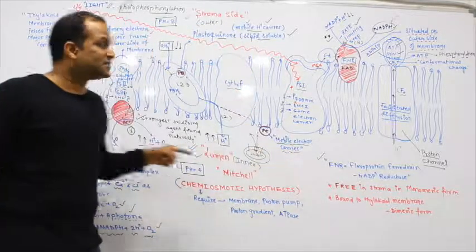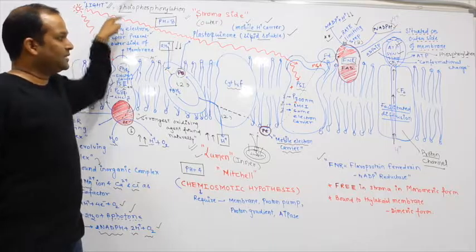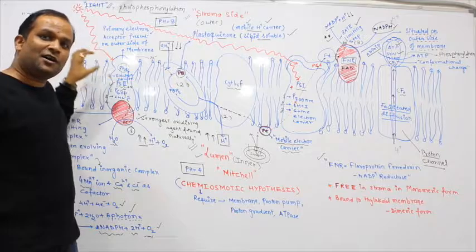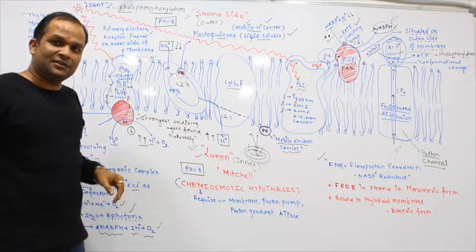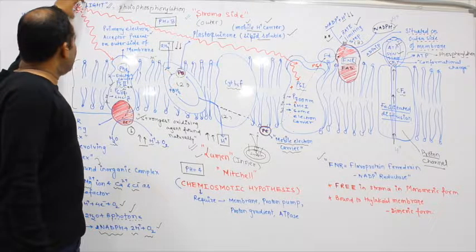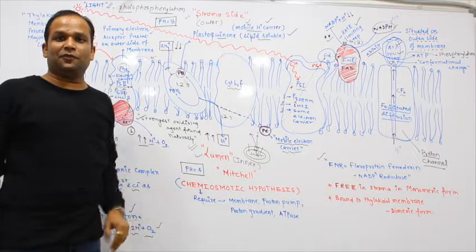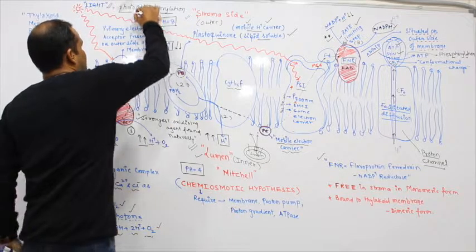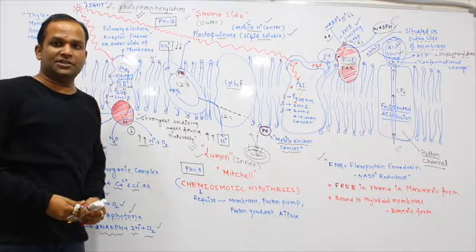Proton gradient is created because of excitation of electrons, and excitation of electrons occurs because of light. Indirectly or directly, this light leads to the formation of ATP. Therefore, this process is known as photophosphorylation.